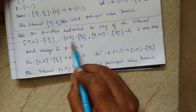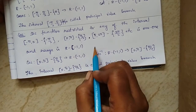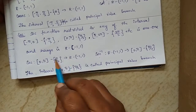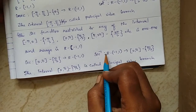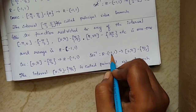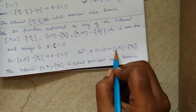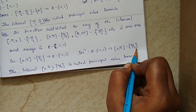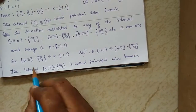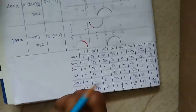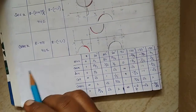Since this is a bijective function, the secant inverse exists. Therefore, secant inverse has domain R minus (-1, 1) and range [0, π] minus {π/2}. This interval is the principal value branch. The last function to consider is the cosecant function.